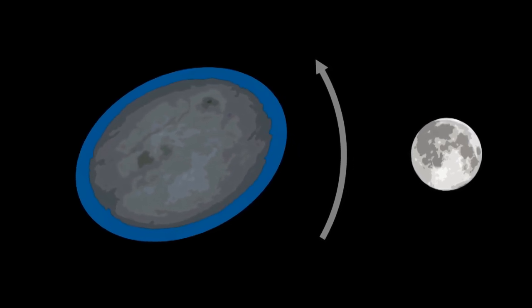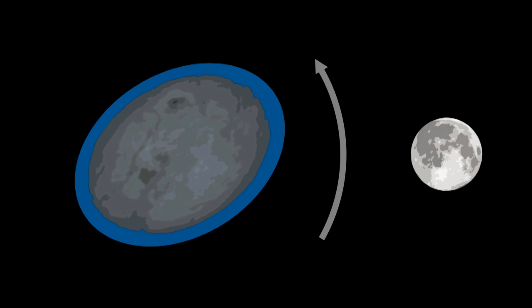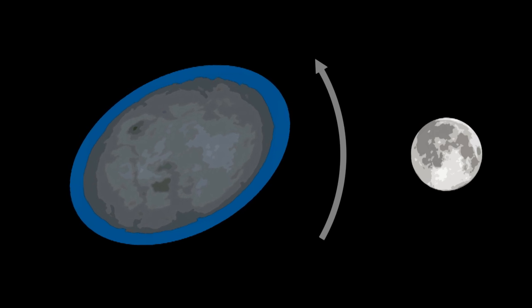It takes time for the Earth to stretch itself towards the moon, and it never has time to finish stretching because the Earth keeps spinning. So the bulge is never perfectly aligned to the moon. It keeps spinning ahead of the moon.